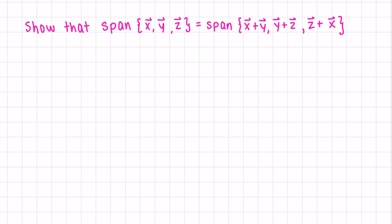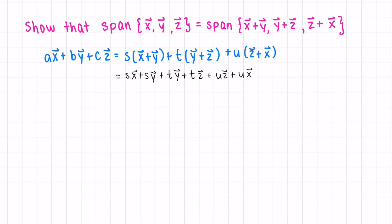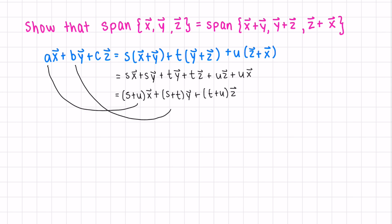Now let's show that two spans are equal a more algebraic way. Let's see if a linear combination ax plus by plus cz equals a linear combination of the vectors in the second span using different variables s, t, u. Expanding the right side and collecting x, y, and z terms gives: (s+u)x + (s+t)y + (t+u)z. Setting coefficients equal: a equals s plus u, b equals s plus t, and c equals t plus u.